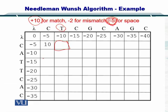T does not match with C, so we will get a -2. -5 minus 2 will be equal to -7. -5 is coming from here, the diagonal.